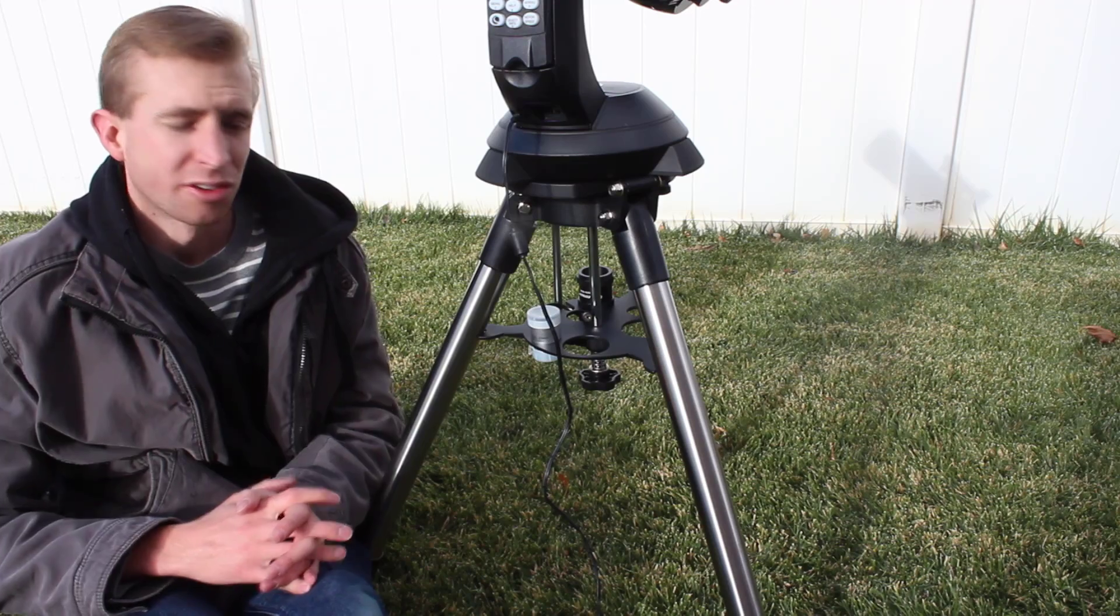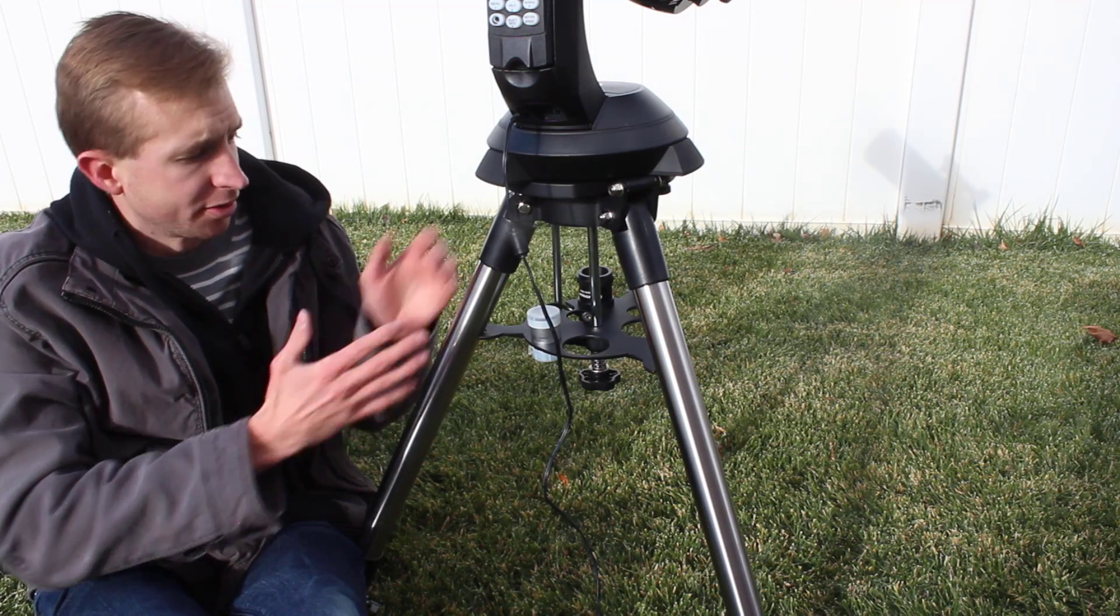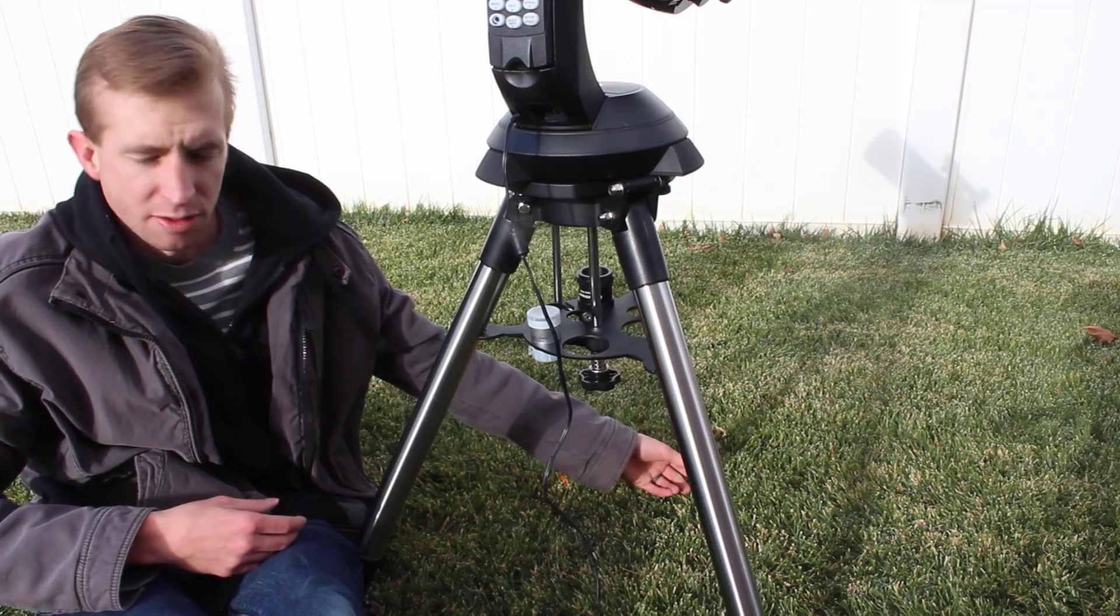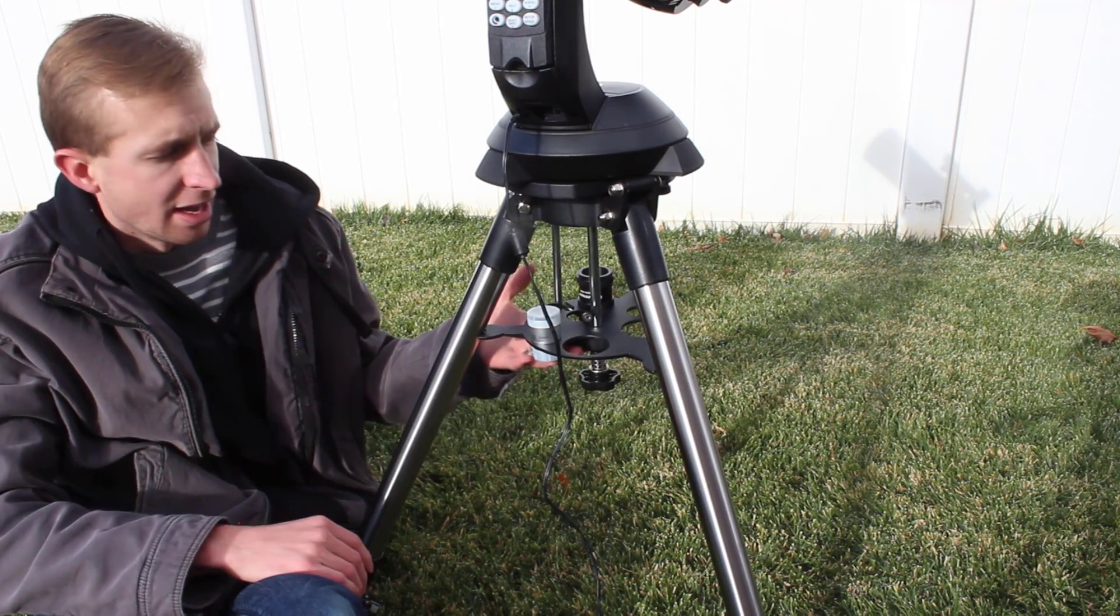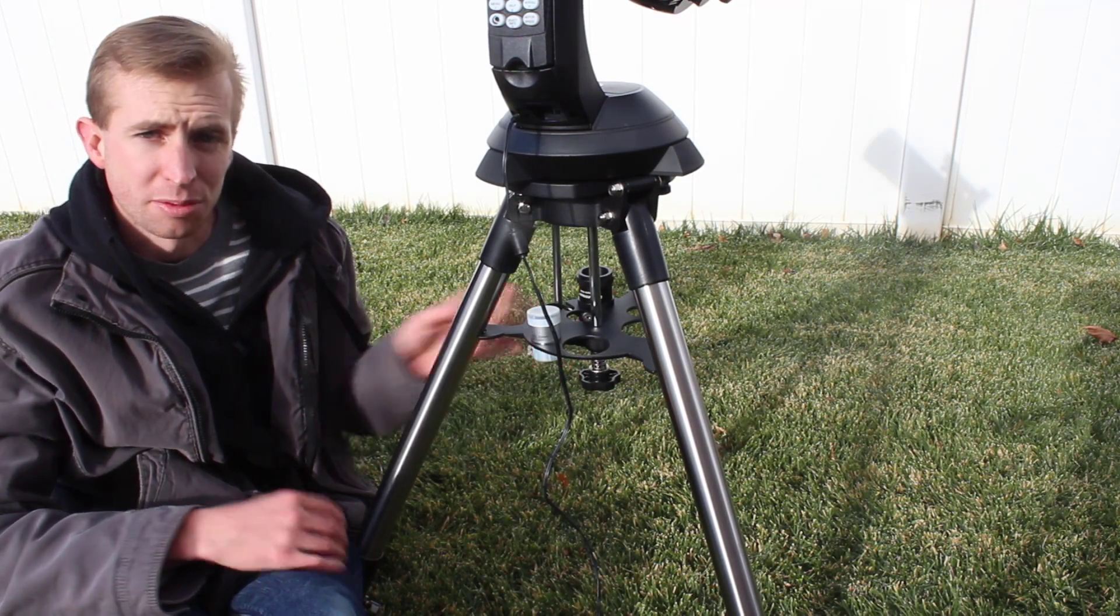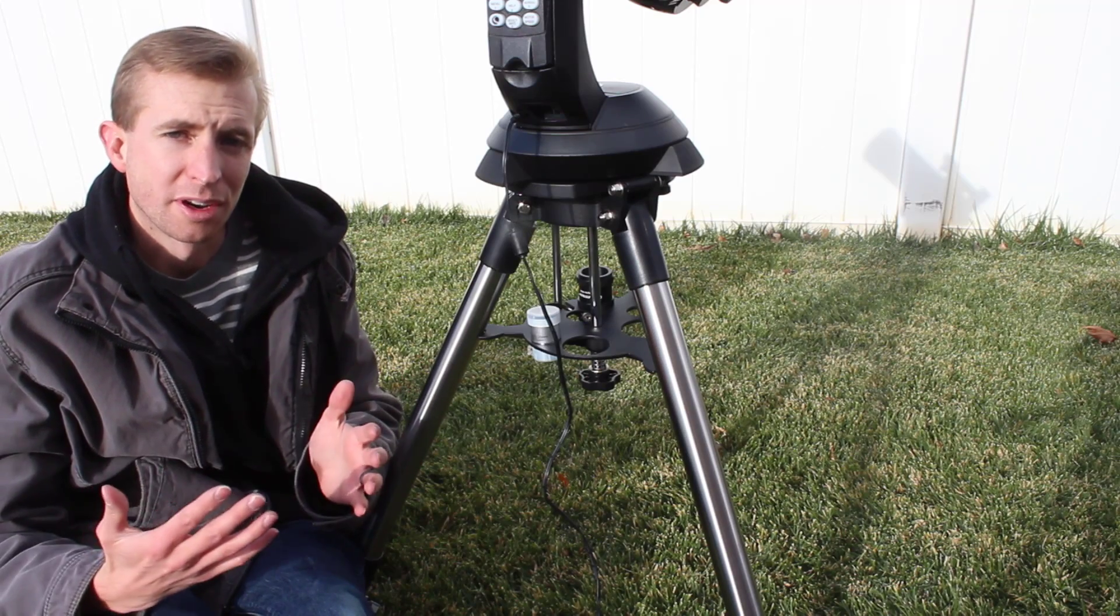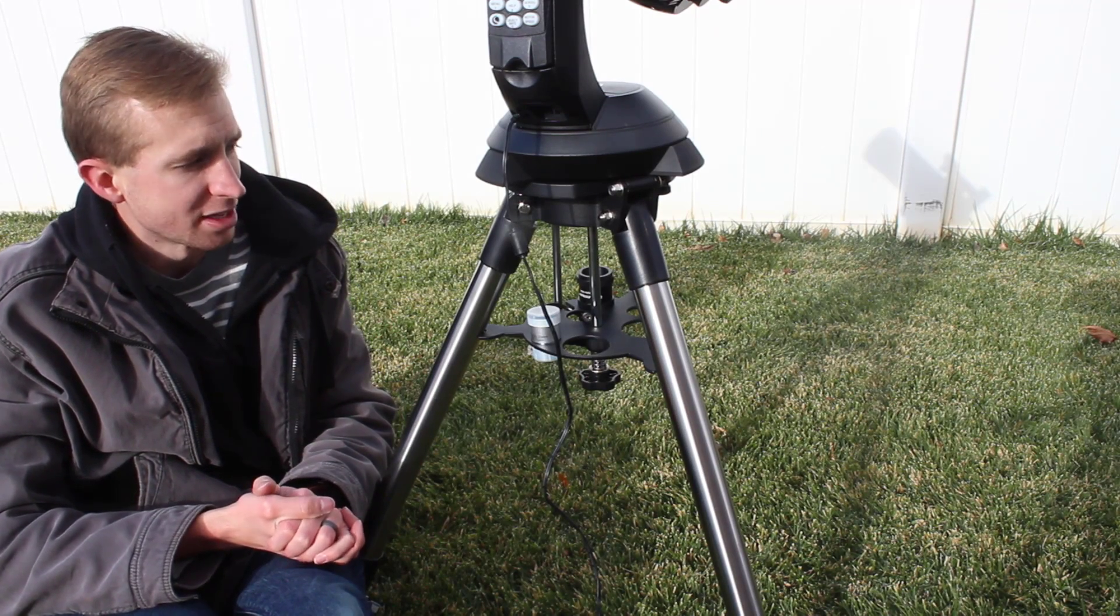All of the Nexstar SE telescopes include an excellent tripod. So you'll get good stainless steel tripod legs. They're fully adjustable for height, and you have a good accessory tray as well. So you don't have to worry about upgrading the tripod. It's ready to go out of the box, which is a great touch.